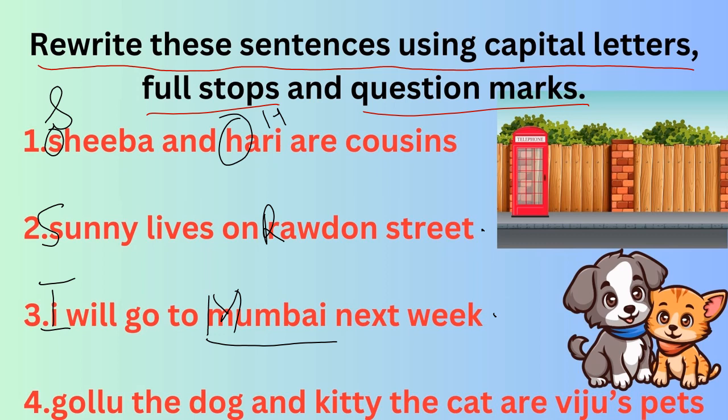Fourth: 'Golu the dog and Kitty the cat are Viju's pets.' Golu is the dog's name, so G should be in capitals. Kitty is the cat's name, so K should also be in capitals. Viju is someone's name, so V should also be in capitals. After 'pets,' put a full stop.